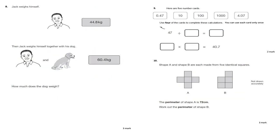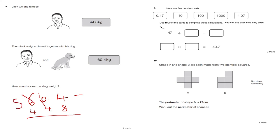Question 8: Jack weighs 44.8 kg; Jack together with his dog weighs 60.4 kg. Work out the difference: 60.4 − 44.8. Borrow as needed — 14 take away 8 is 6; 9 take away 4 is 5; 5 take away 4 is 1. The dog weighs 15.6 kilograms.